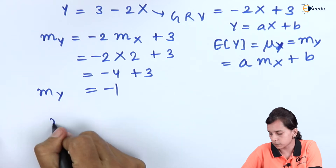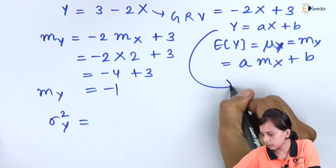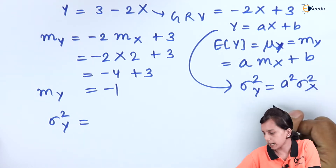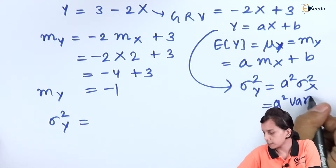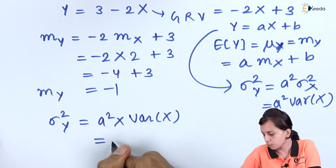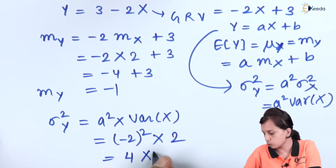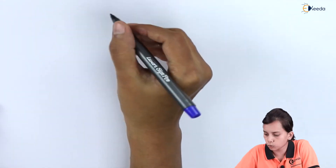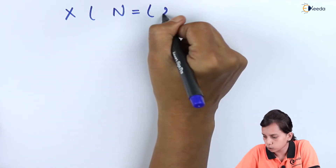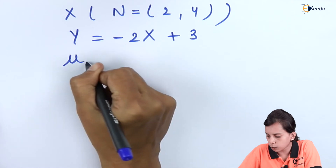Similarly, we calculate the variance of Y. For the linear relation Y equals minus 2X plus 3, the variance formula gives σ²_Y equals a² times σ²_X. Here a equals minus 2, so a² equals 4, and variance of X is already given as 2 — wait, comparing N(2,4): m equals 2 and σ² equals 4. So σ²_Y equals 4 times σ²_X.